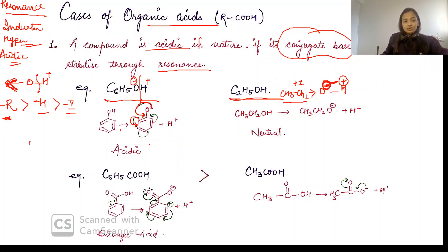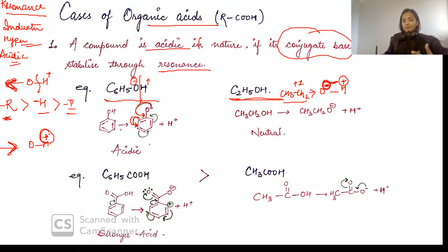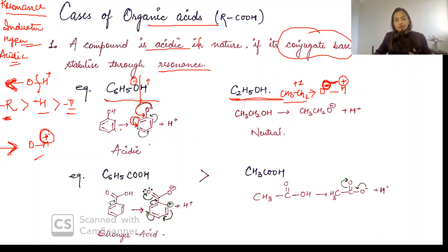But if there is an electron-releasing group present, then this hydrogen will no longer be positive. Ultimately the bond will be stronger and it will not break. Now let's look at this question. Here is phenoxide which is undergoing resonance, and ultimately the negative charge is stabilized.